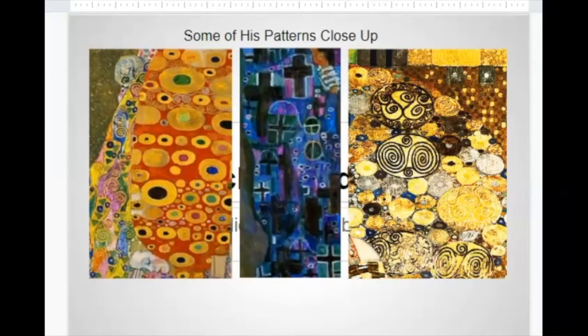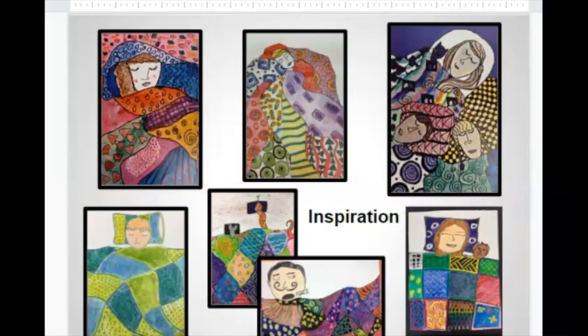Here are some close-ups of some of his paintings and you can see the patterns. They're very decorative — they're designs basically. Pattern and repetition are two of the things he was really known for, and this is what made him famous. This is what we are going to do for our project, and we'll be doing that next. I hope you liked Gustav Klimt!